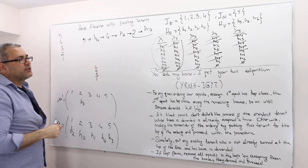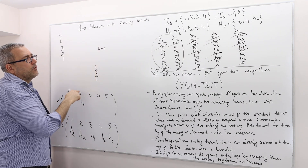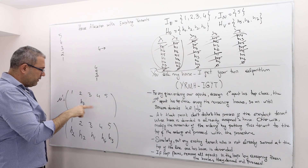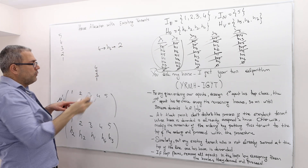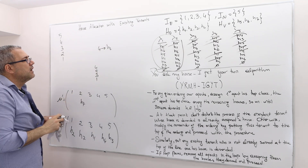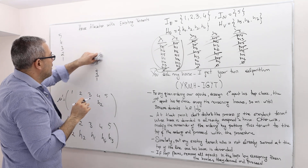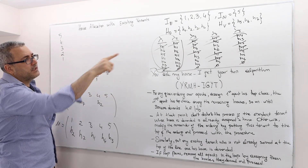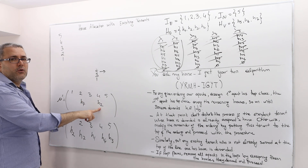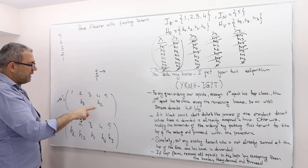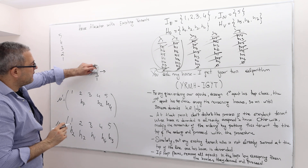We ask agent 4: what is your preferred house? Agent 4 says H2. This time it's not occupied because agent 2 already got house 7. So agent 4 gets house 2 and is removed from the list. Then we ask agent 5: what is your top choice? He says H4, which is still available since agent 4 received house 2. So agent 5 gets house 4 and is off the picture.